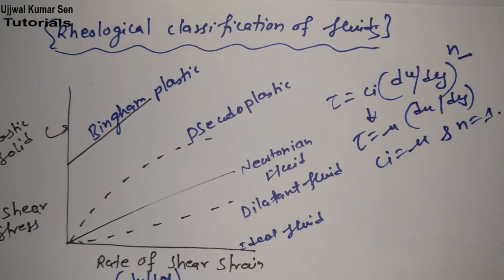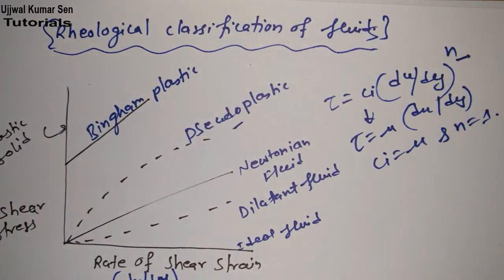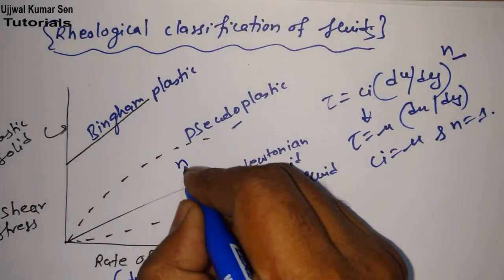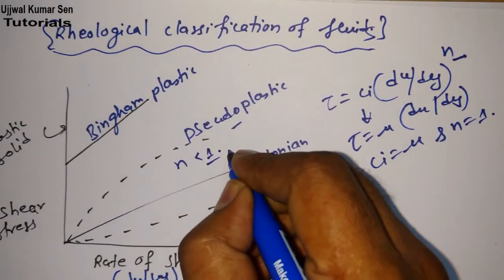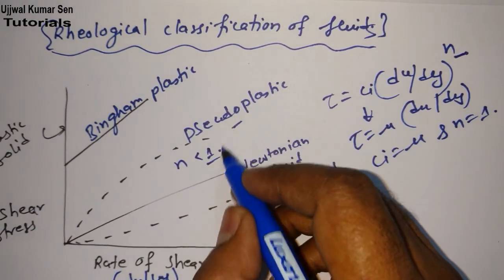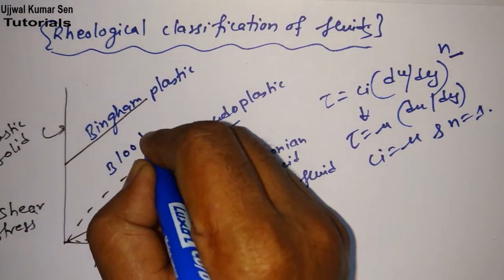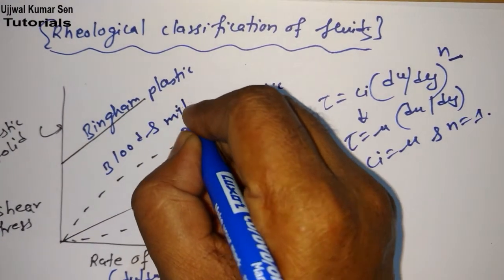Now let's talk about pseudo-plastic fluid. I will tell you examples also. That's why, if you get questions, most of the time you'll get questions from examples only. In case of n < 1, then it is known as pseudo-plastic fluid. Examples: blood and milk.